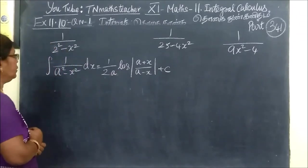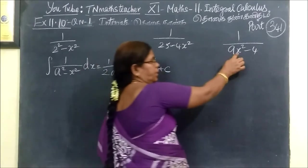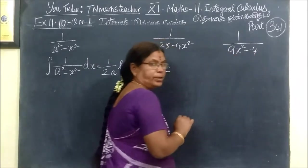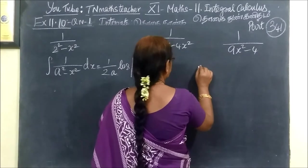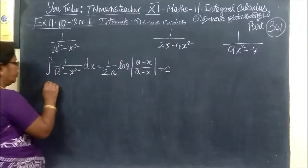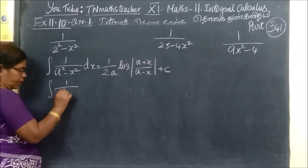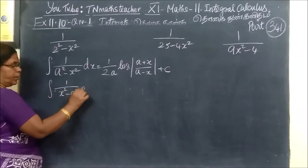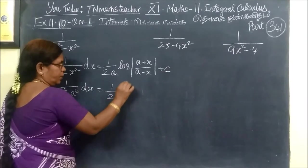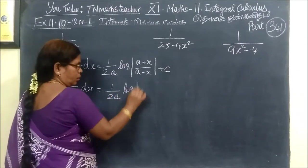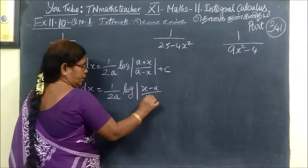Suppose in a question x comes first and a comes next, then we are writing a different form. Integrate 1 by x squared minus a squared dx equals 1 by 2a into log of x minus a by x plus a.